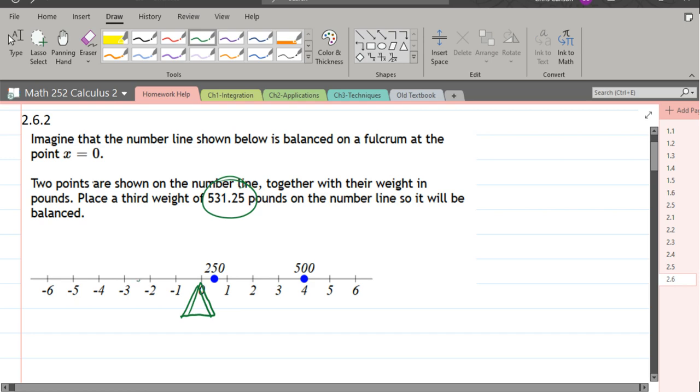It's a little dangerous to just take a guess and say somewhere over here maybe between negative three and negative two. So I'll just put the point somewhere up top, we don't know where that's going to be, we'll call the position x. We know the weight already is 531.25 pounds.